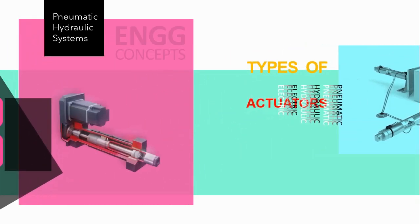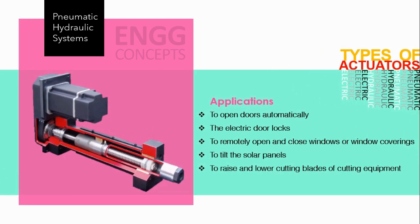Actuators are used for a wide range of applications — we can find them everywhere. When we go shopping, the door of the mall opens automatically. In automobiles, electric door locks allow us to remotely open and close heavy or high windows. Actuators are used to tilt solar panels to directly face the sun as it moves across the sky, and to raise and lower cutting blades of cutting equipment in the paper industry.